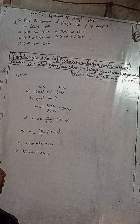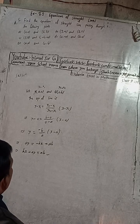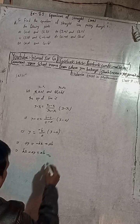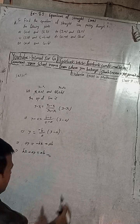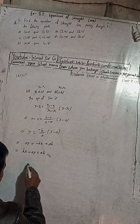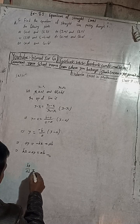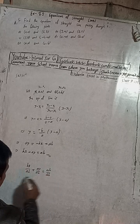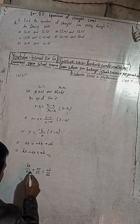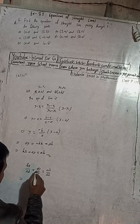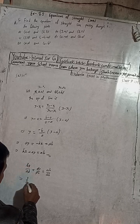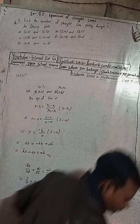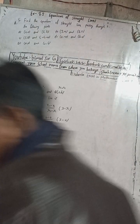We should also write this in intercept form. Dividing both sides by ab: bx over ab plus ay over ab equals ab over ab, which simplifies to x over a plus y over b equals 1. This is the intercept form of the equation.